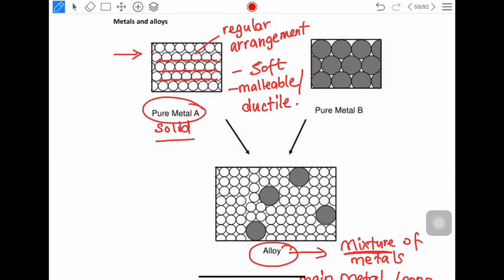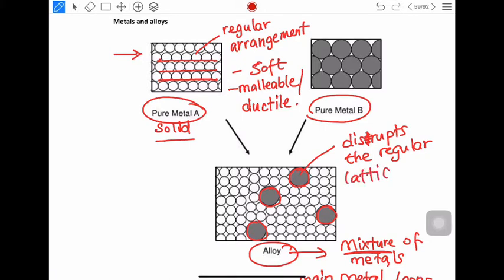An alloy is a mixture. In that mixture, let's say you have metal A and pure metal B that are mixed together to form an alloy. This is what the structure would be. The metal B, the particles of metal B, kind of fits in between the particles of metal A and disrupts the regular lattice. So regular lattice is disrupted.